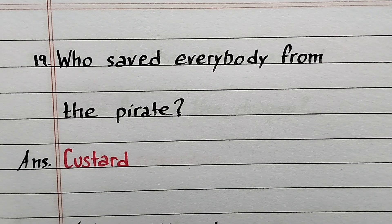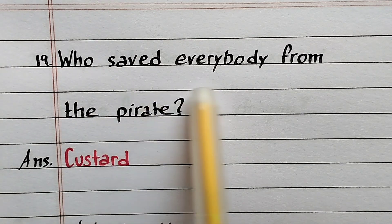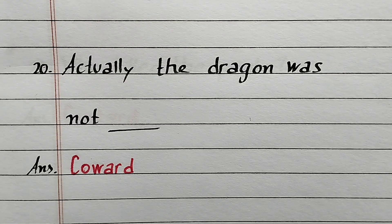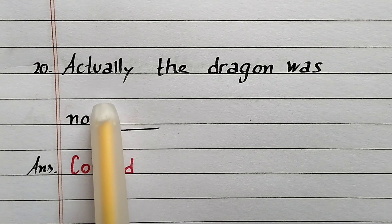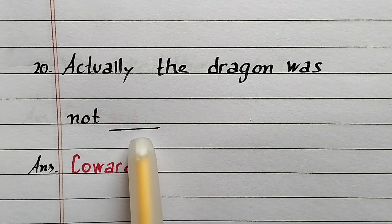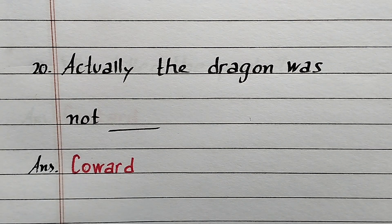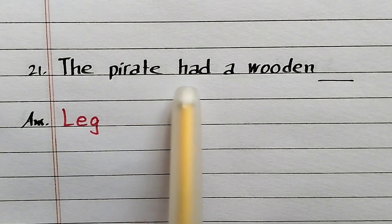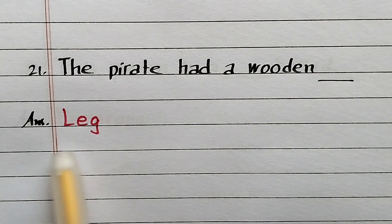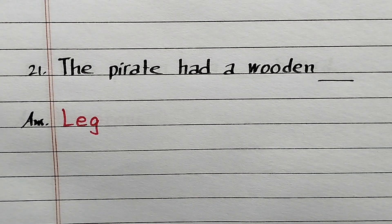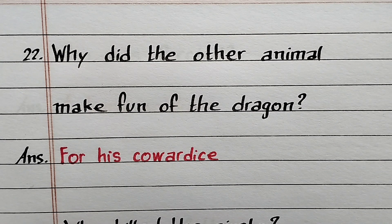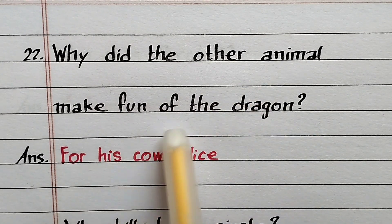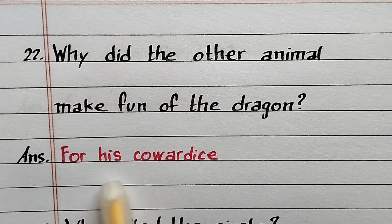Question number 19: Who saved everyone from the pirate? Answer: Custard. Question number 20: Actually the dragon was not this? Answer: Coward. Question number 21: The pirate had a wooden ___? Answer: Leg. Question number 22: Why did the other animals make fun of the dragon? Answer: For his cowardice.